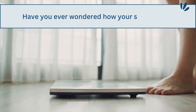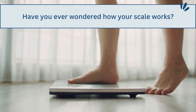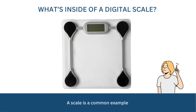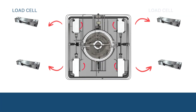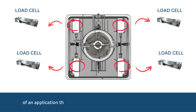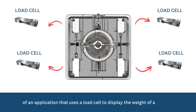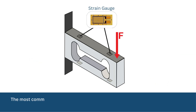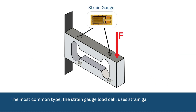Have you ever wondered how your scale works? A scale is a common example of an application that uses a load cell to display the weight of an object. So what is a load cell? The most common type, the strain gauge load cell, uses strain gauges attached to a material that deforms under load.